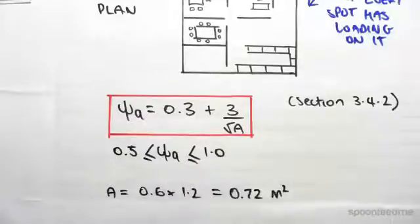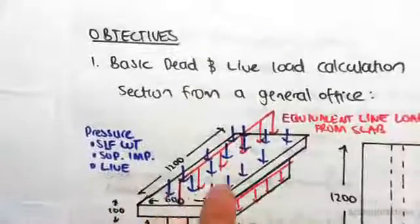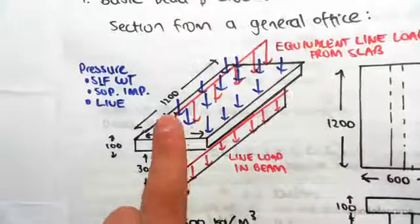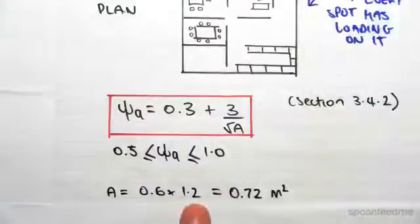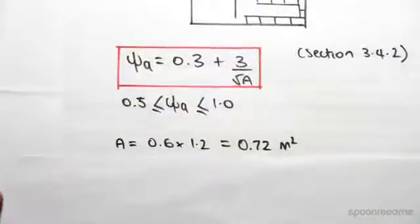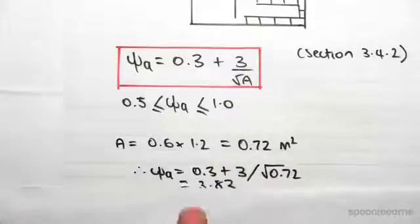see this in action. For example, back to our problem we had before, the area of our slab would be 0.6 by 1.2 meters. 0.6 by 1.2 meters gives us 0.72 meters squared. Working out this reduction would be psi a equals 0.3 plus